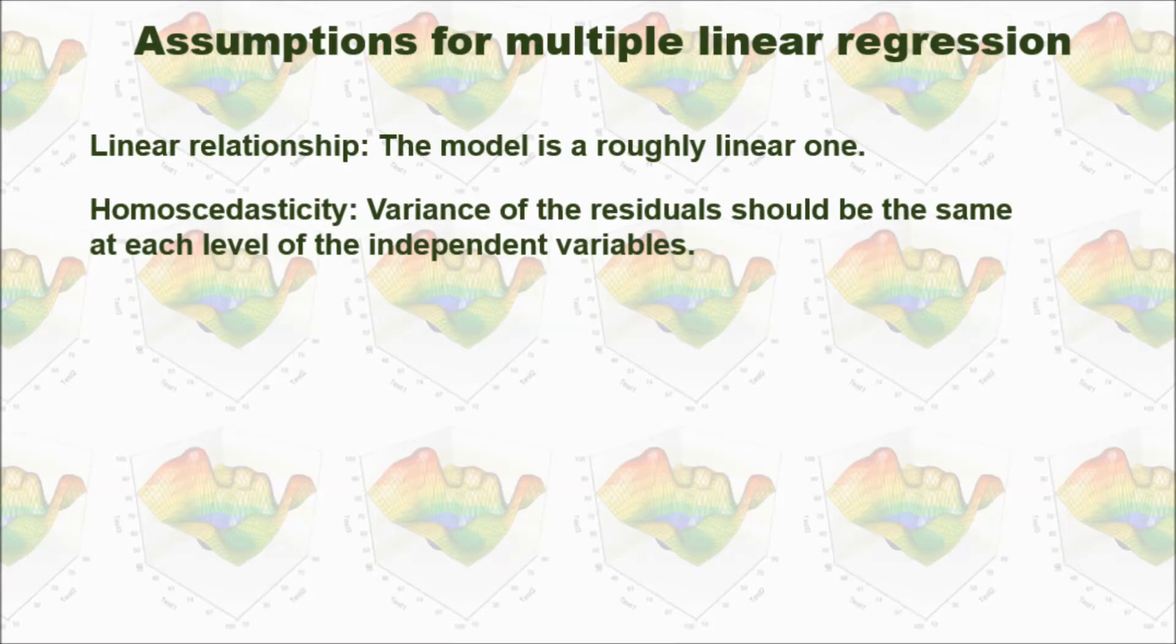The second assumption is you should have homoscedasticity. That is, variance of the residuals should be the same at each level of the independent variables.